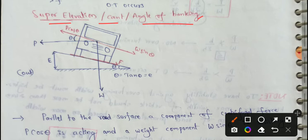For example, this is a super elevation. This is a road surface.